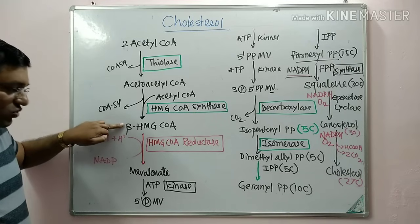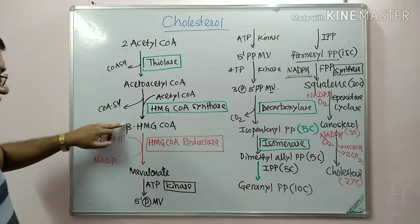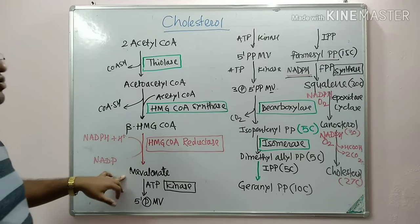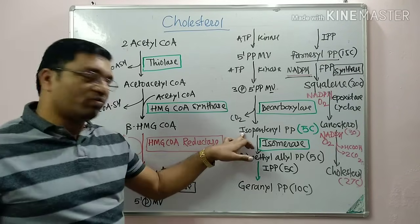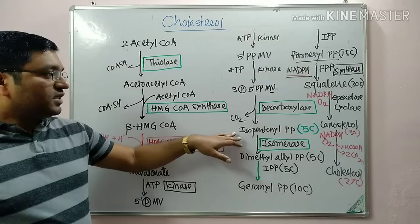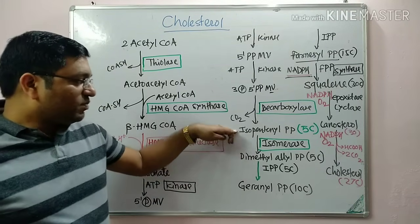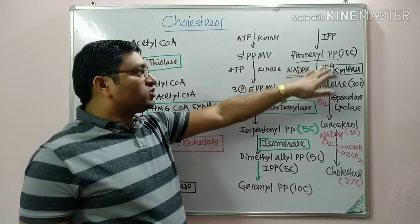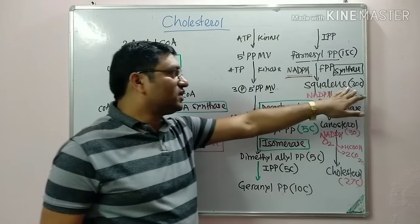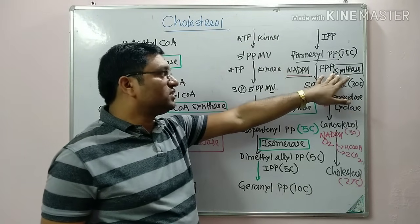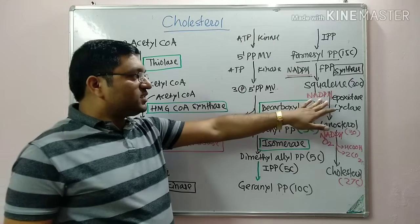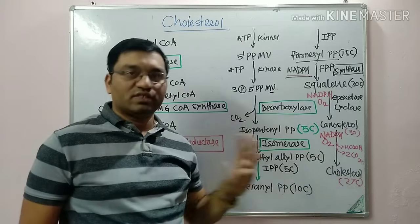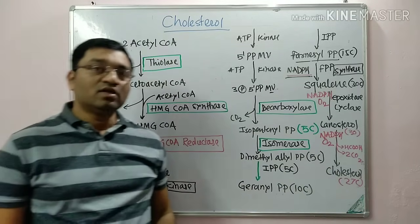Summary of the five steps: First, synthesis of HMG-CoA. Second, conversion of HMG-CoA into mevalonate. Third, phosphorylation and decarboxylation of mevalonate to form isopentenyl pyrophosphate. Fourth, condensation reactions converting isopentenyl pyrophosphate into farnesyl pyrophosphate, which condenses to give squalene — a 30-carbon compound — via squalene synthase. Fifth, by NADPH and O₂-dependent reactions, squalene is converted through various steps into cholesterol, the 27-carbon compound.